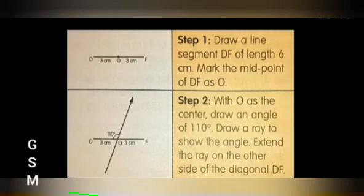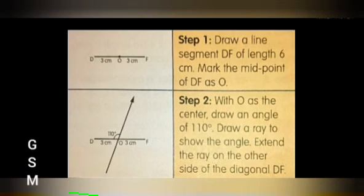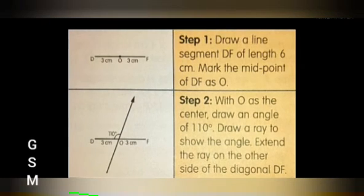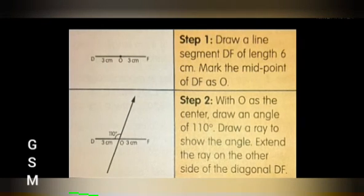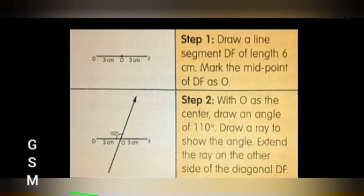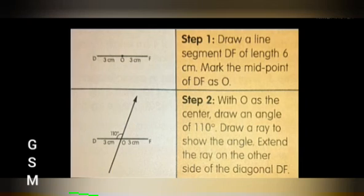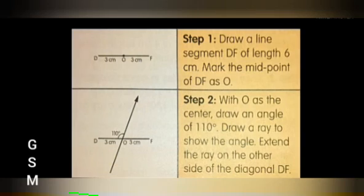Step 1: Draw a line segment DF of length 6 cm. Mark the midpoint of DF as O. Step 2: With O as center, draw an angle of 110 degrees and draw a ray to show the angle. Extend the ray on the other side of the diagonal DF.